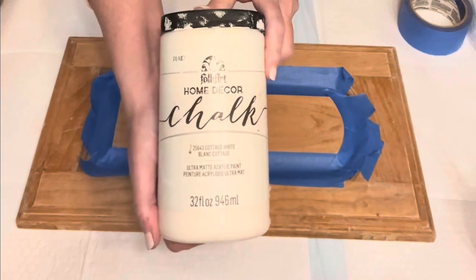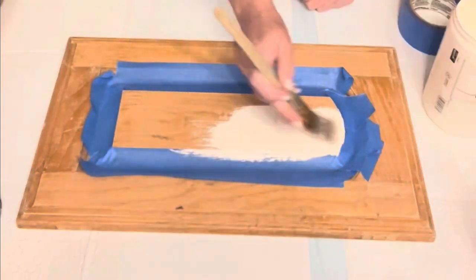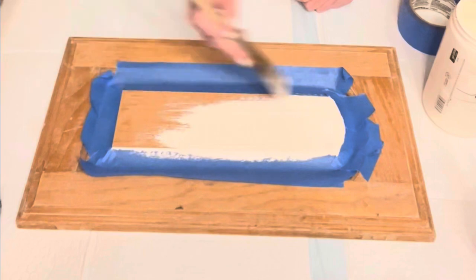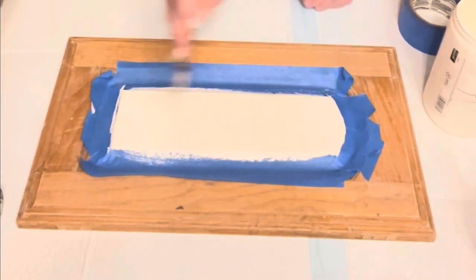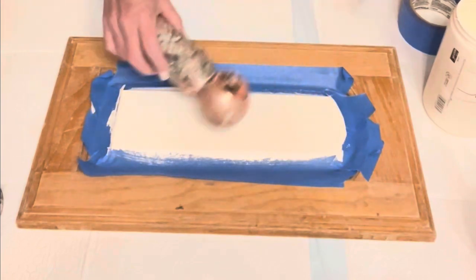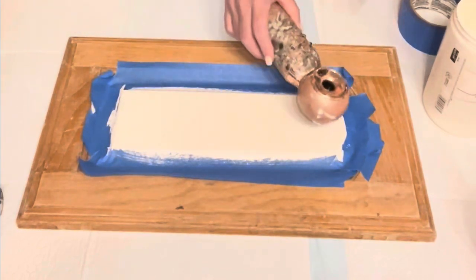Then I'll use my Folk Art chalk paint in the color Cottage White and apply a good layer to the portion that I taped off. You want to make sure that you get a good smooth coat and then take your blow dryer and make sure that that layer is very nice and dry.